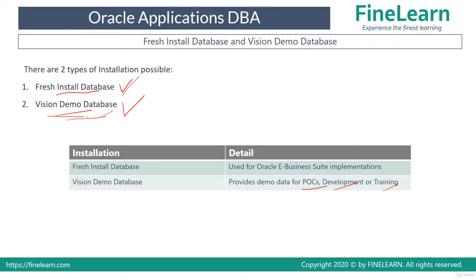The Vision demo database contains a lot of dummy data — many transactions, dummy users, test transactional details such as payroll information, and many reports — all with existing data so it can be easily used for demo purposes. For example, if you are from an Oracle consulting company and want to show a customer the features of Oracle E-Business Suite, you can use the Vision demo database.